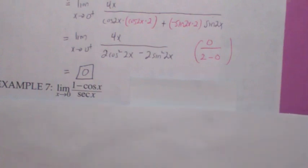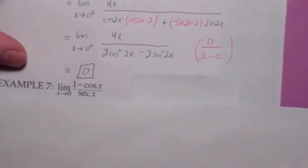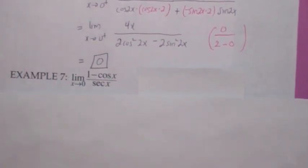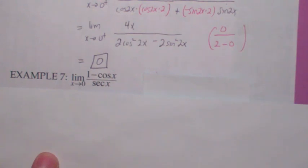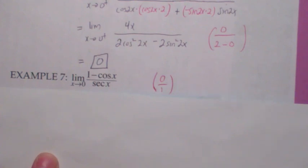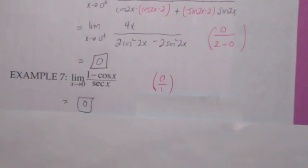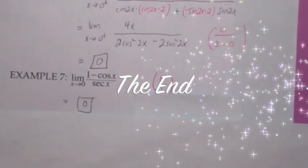The last thing to say is: when doing these problems, make sure you check the form first. Don't just jump to L'Hôpital's Rule. In this problem, the top is getting close to 0 but the bottom is getting close to 1 — so L'Hôpital's Rule doesn't apply. Zero over one is just 0.